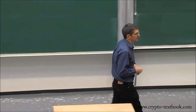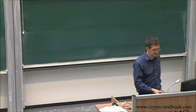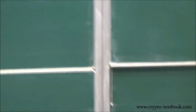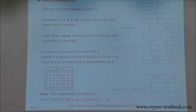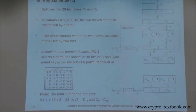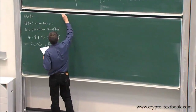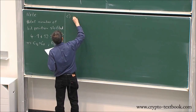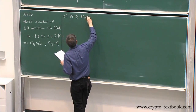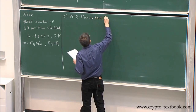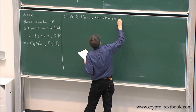So what else do we need to know about the key schedule? We talked about PC1, C0, D0, the shift registers, and the rotation elements. We have 28 and 28 bits — 56 bits together — fed into another box: PC2. That is the third and last element. PC2 stands for Permuted Choice number two.